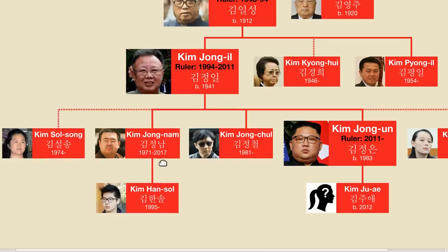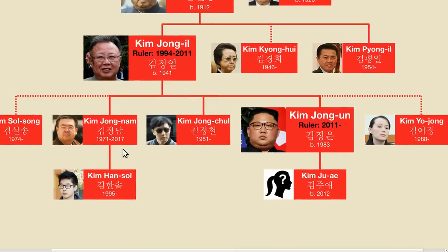His eldest known son was named Kim Jong-nam, whose mother was an actress and one of his father's mistresses. For several years, it was thought that he would be next in line. However, in 2001, he was arrested in Japan while using a fake passport — supposedly he was trying to visit Disneyland. Whatever the truth may be, he quickly fell from favor, and then several years after his younger brother gained power, he was assassinated in Malaysia.